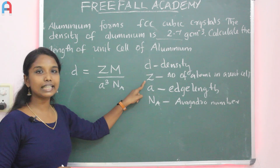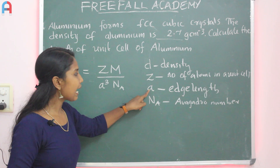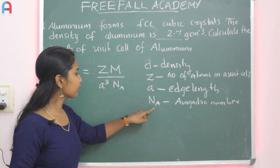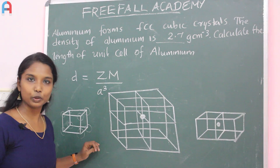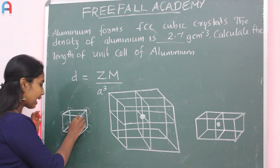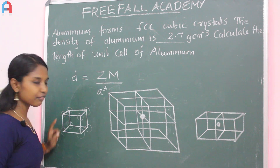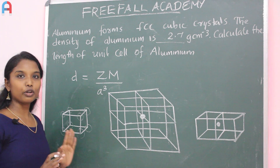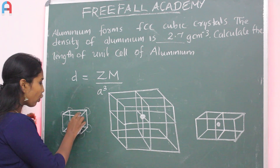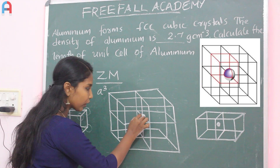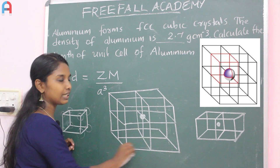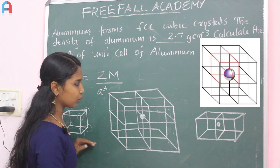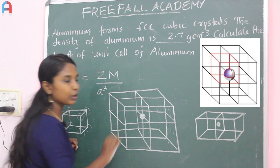Z is the number of atoms in the unit cell and A is the edge length. In an FCC structure, atoms are located at each corner and on each face. One corner atom is shared among 8 unit cells, and one face atom is shared between 2 unit cells.